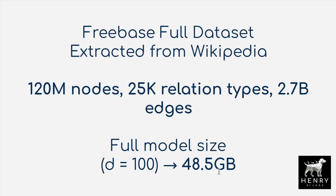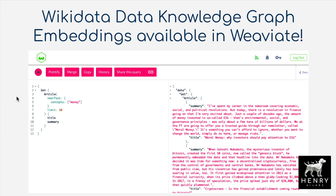The big contribution of PyTorch Big Graph is figuring out how to efficiently optimize these vectors even though you can't load the entire vector set into memory, requiring things like block partitioning. I'm really excited to announce the upcoming release of the Wikidata knowledge graph in Weaviate. This isn't completely out yet, but it's on the near-term horizon and involves a web demo with vector search capabilities.